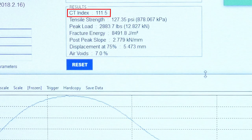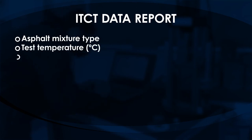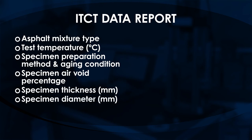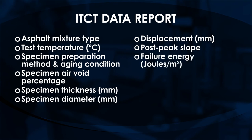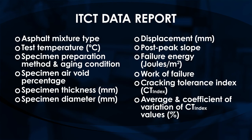Analyze the test data and calculate the cracking tolerance index or CT index as described in the standard. An ITCT data report may include the following parameters for each test specimen: asphalt mixture type, test temperature in Celsius, specimen preparation method and aging condition, specimen air void percentage, specimen thickness in millimeters, specimen diameter in millimeters, displacement at 75% of the peak load after the peak in millimeters, post-peak slope, failure energy in joules per meter squared, work of failure, cracking tolerance index or CT index, and average and coefficient of variation in percent of CT index values.